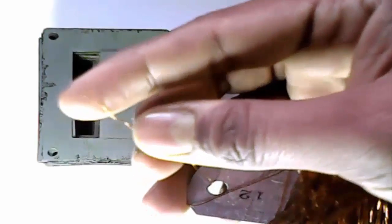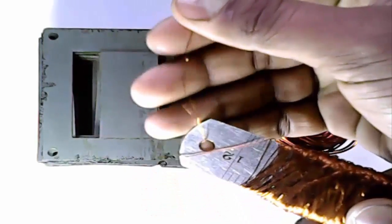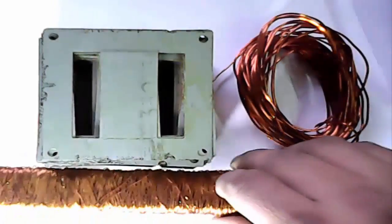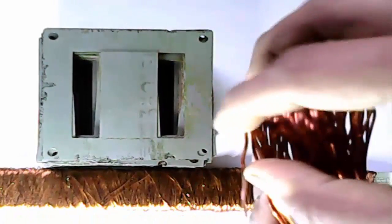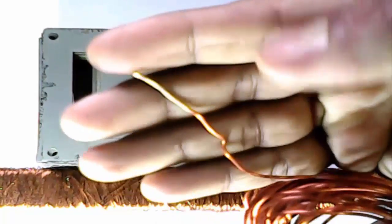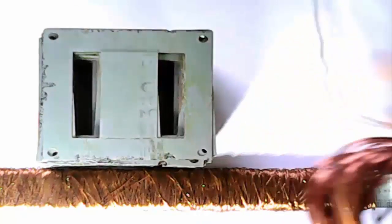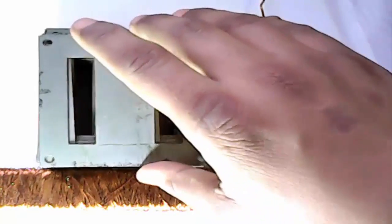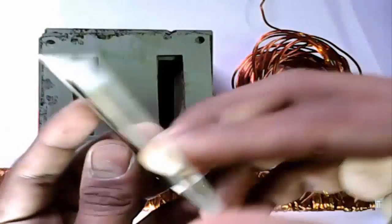This is AC wire, slim wire, and this is fat and strong DC wire. This is iron sheet.